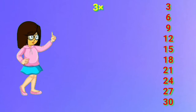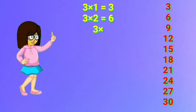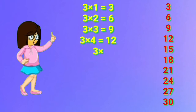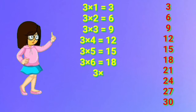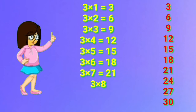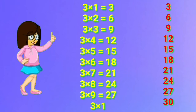3 one's are 3. 3 two's are 6. 3 three's are 9. 3 four's are 12. 3 five's are 15. 3 six's are 18. 3 seven's are 21. 3 eight's are 24. 3 nine's are 27. 3 ten's are 30.